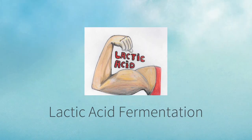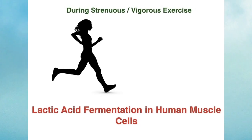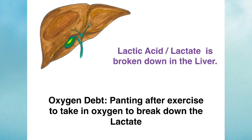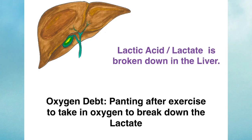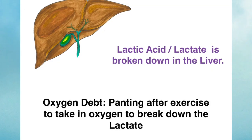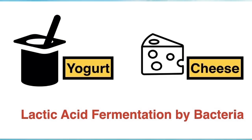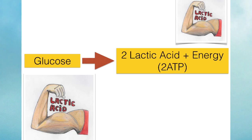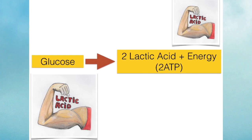Lactic acid fermentation can happen in our muscle cells during strenuous or vigorous exercise, when muscle cells would be lacking in oxygen. Eventually the lactic acid — really the lactate — is broken down in the liver and converted back into pyruvate. During this process we pant a lot after exercise because we are in oxygen debt; we need to take in enough oxygen to break down that lactate. In addition to muscle cells, lactic acid fermentation is carried out by some bacteria, and it's the process by which yogurt and cheese are produced. So you began with a glucose molecule broken down to form two lactic acid molecules, with a net gain of only two ATPs.